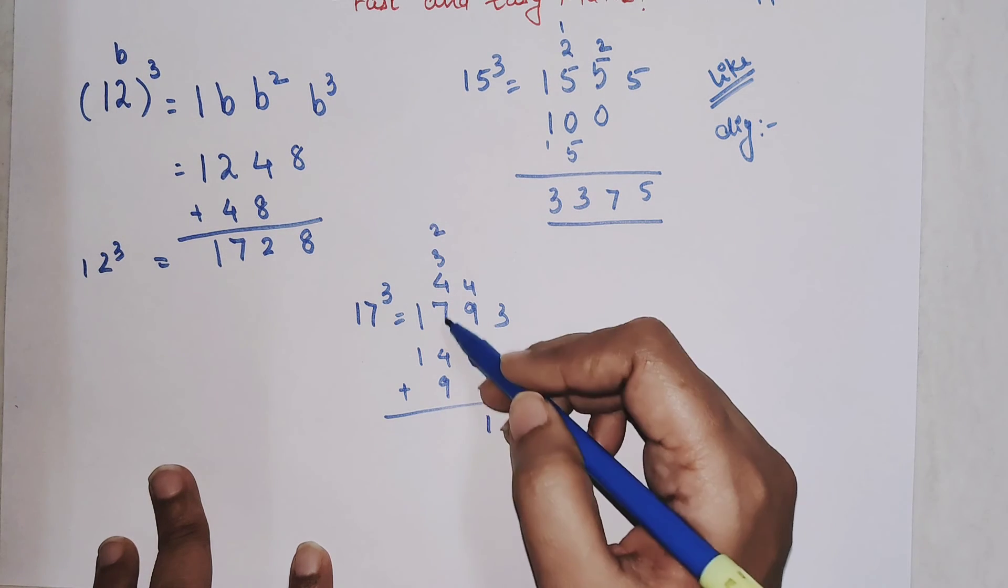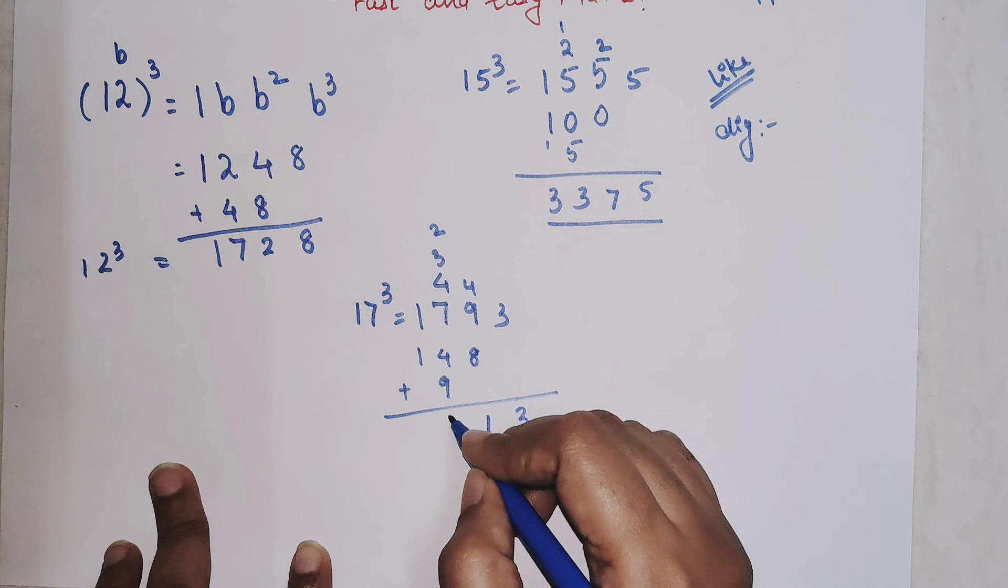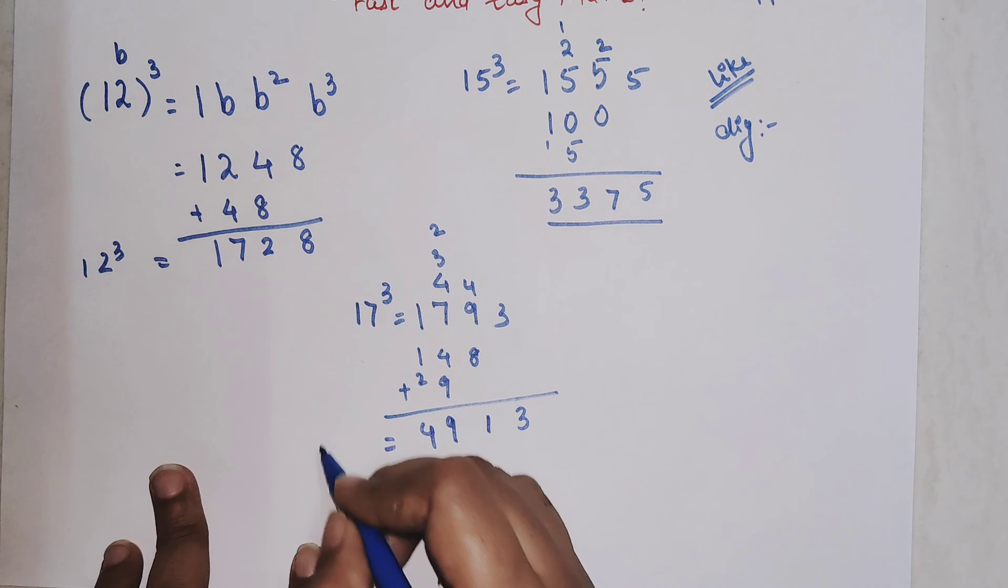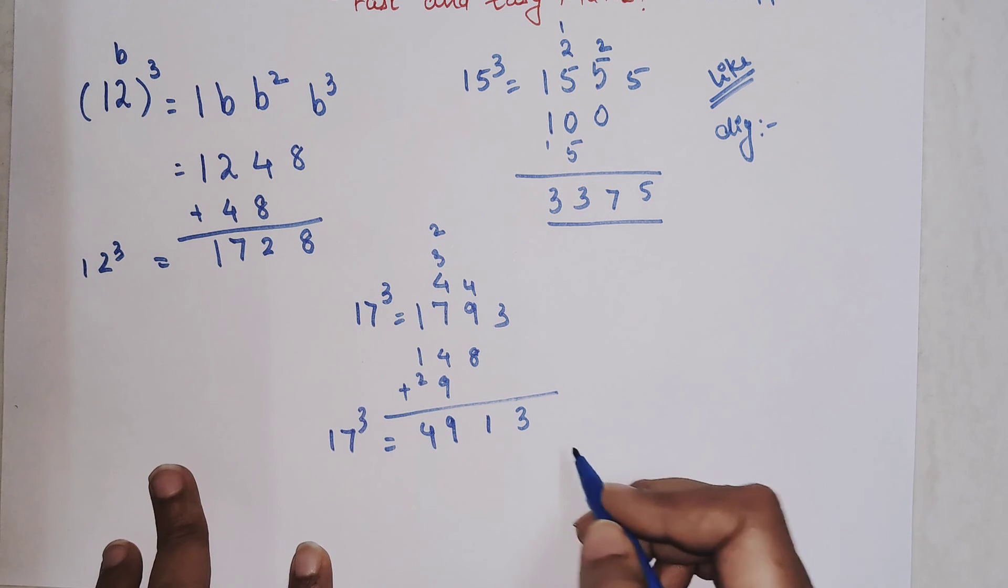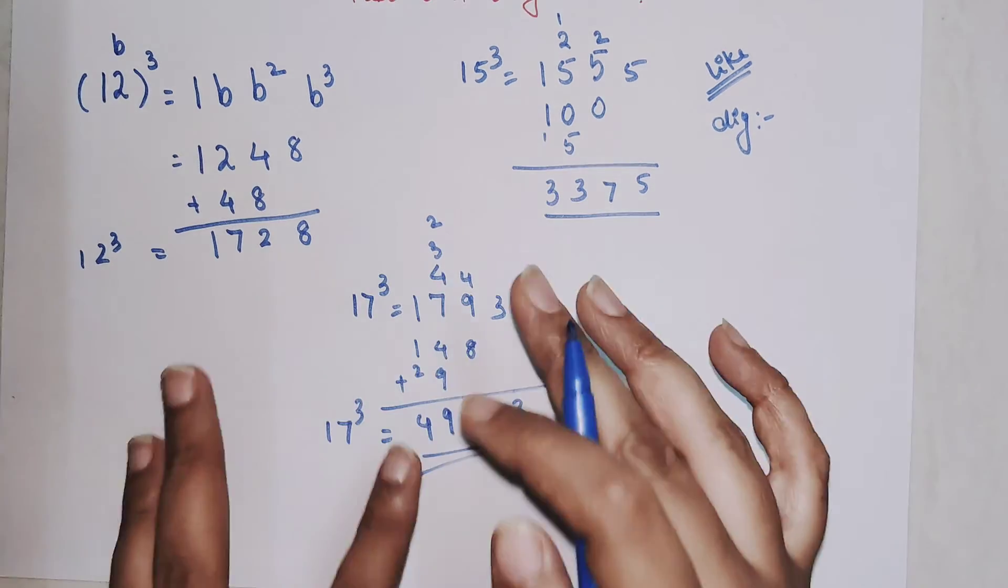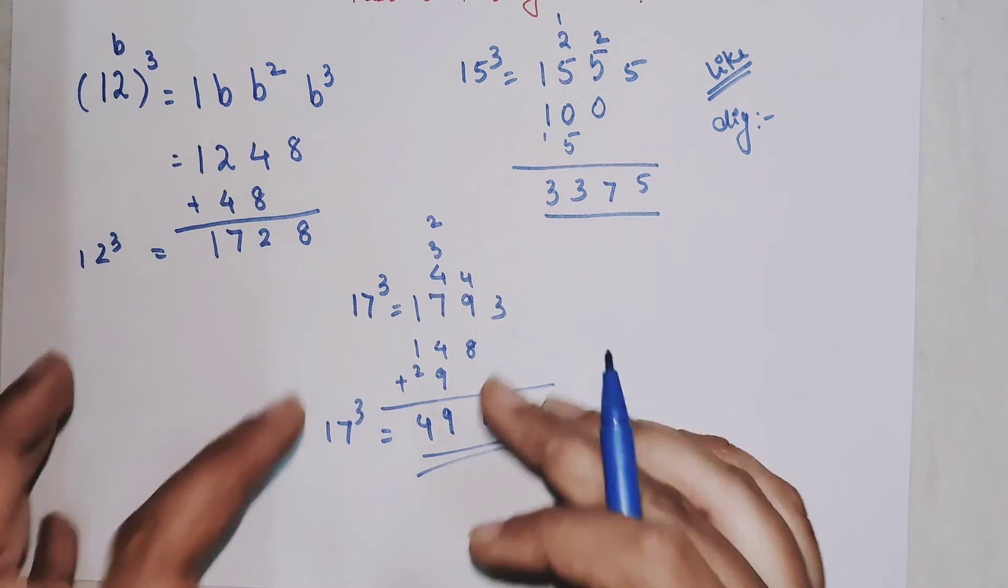Nine plus nine is 18, 18 plus seven is 25, 25 plus four is 29, so two. So your answer for 17 cube is 4913. Please understand for any trick to settle in you need to practice it for a couple of times and then only the entire method will stick with you.